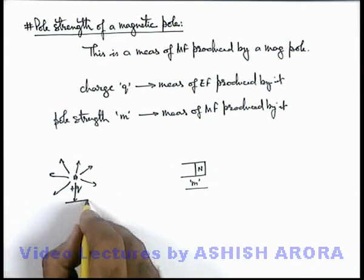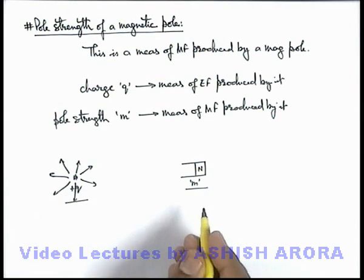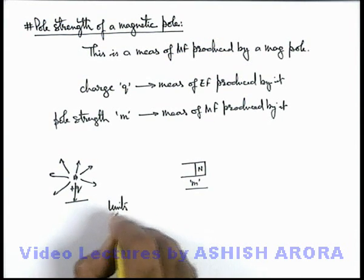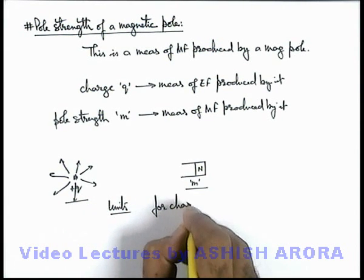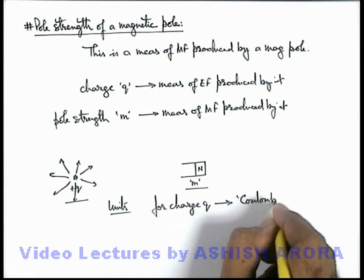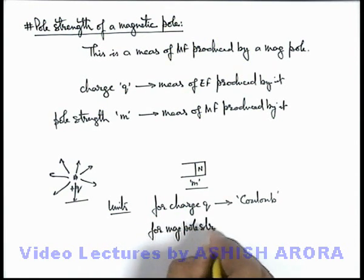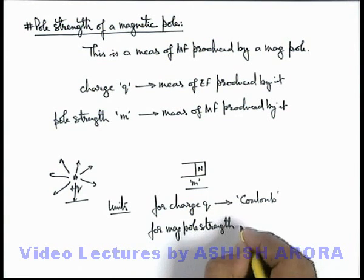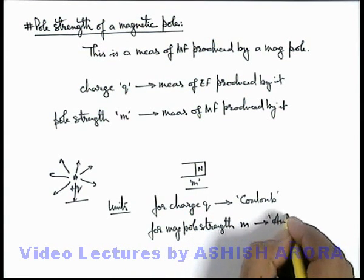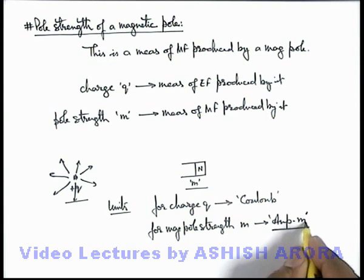We're going to discuss in detail about the magnetic pole and its further similarity with charge later. Right now we can talk about the units used. For charge q, we use the unit coulomb. Similarly, for a magnetic pole strength m, we use the unit ampere-meter. Just keep in mind that the magnetic pole strength is measured in units of ampere-meter, and its physical significance will be seen in the coming section.